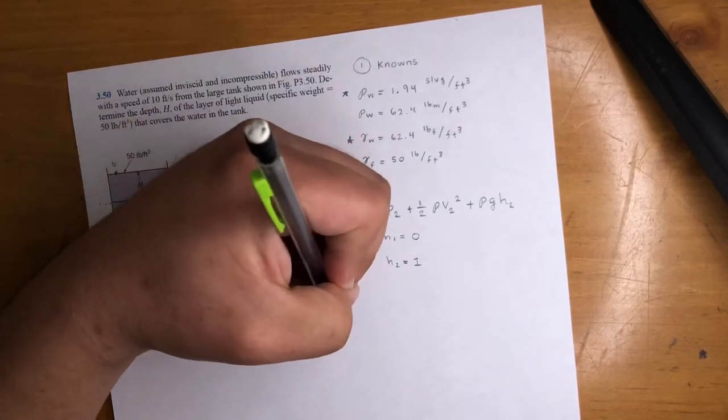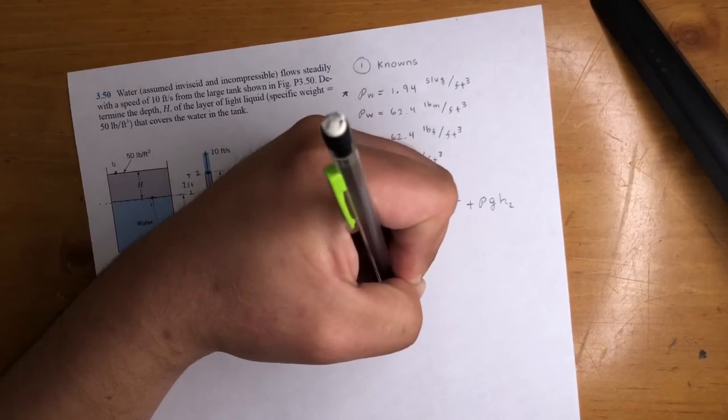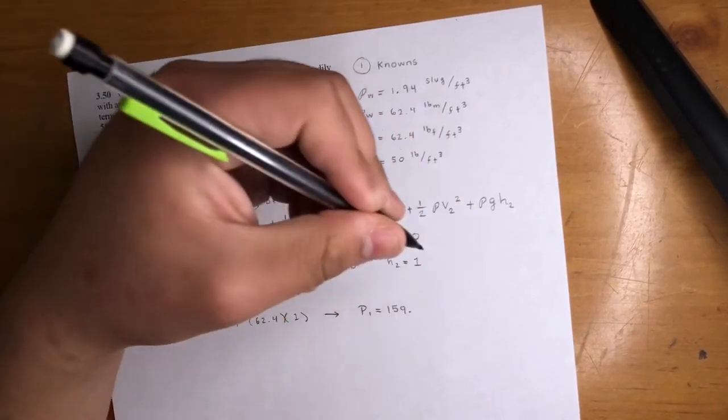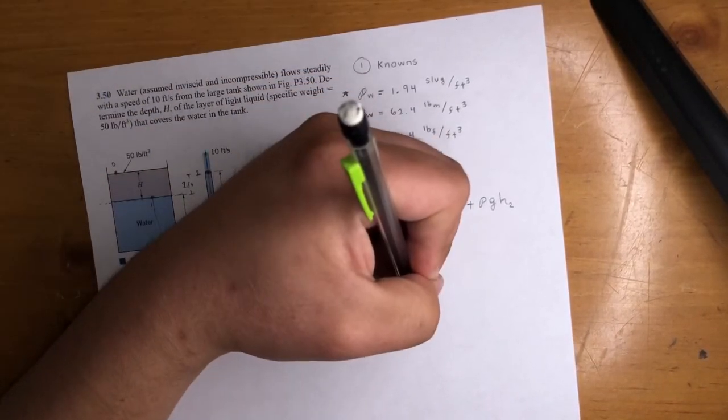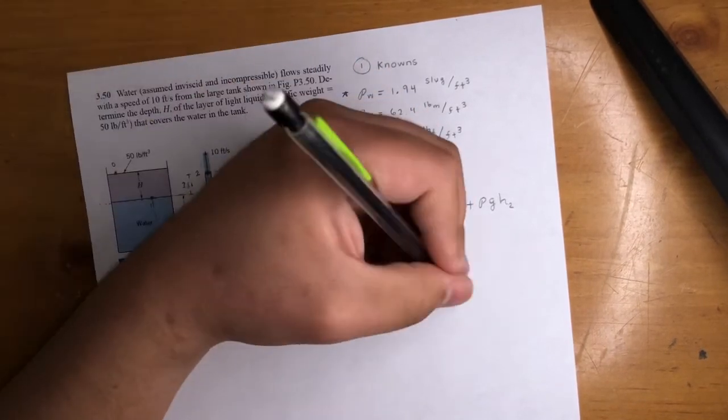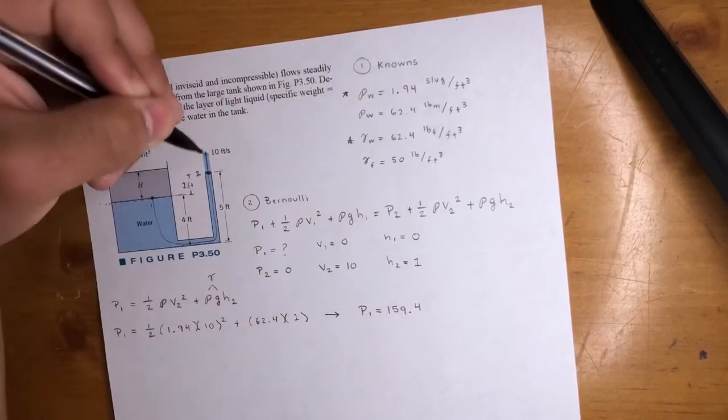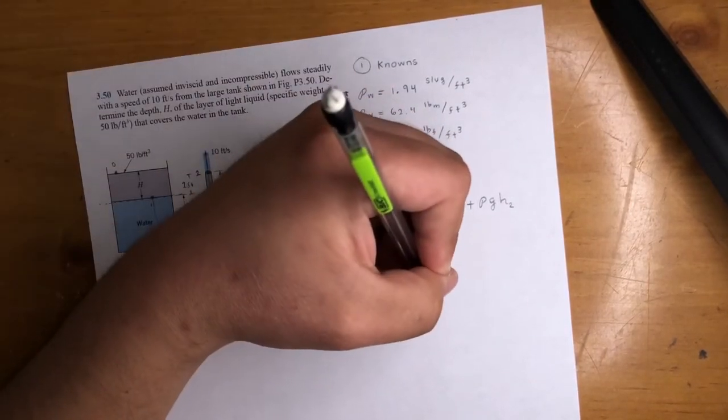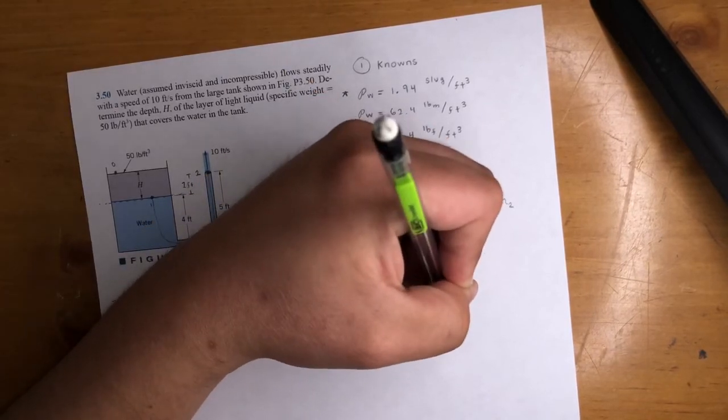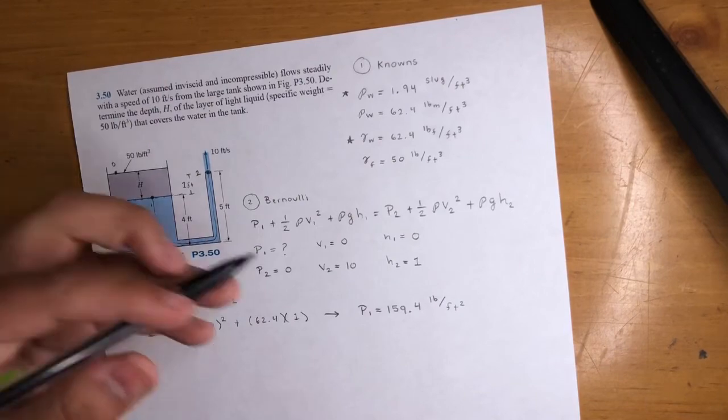P1 will be 159.4. This is not newtons per meter cube. This is PSI, pound per, oh actually no. It's pound per feet squared. It's not PSI.